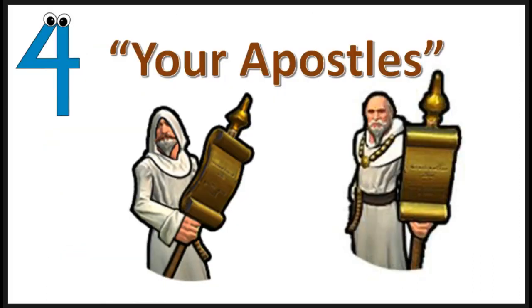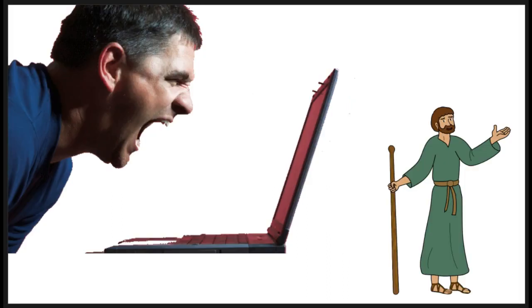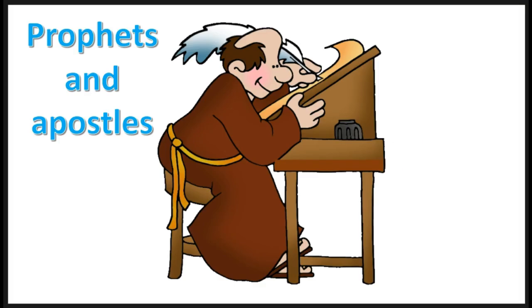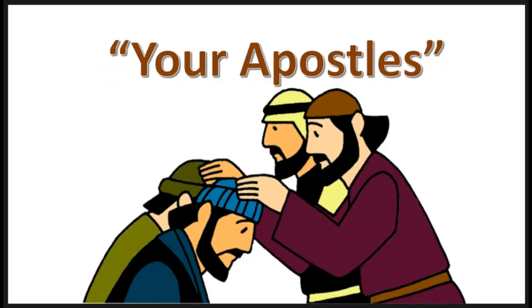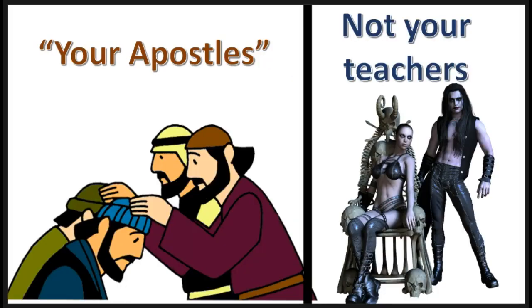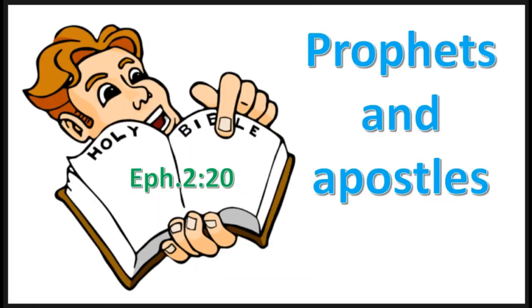The fourth reason given by the critics is this: the text says 'your apostles,' which seems to be a strange and cold label for an author who is an apostle. Also, the combination of prophets and apostles is similar to that of the 2nd-century writers. The response is, 'your apostles' is a reference to apostles that worked with the readers — your apostles in contrast to false teachers that are not theirs. As to the combination of prophets and apostles, this is found elsewhere in Scripture, Ephesians 2:20.